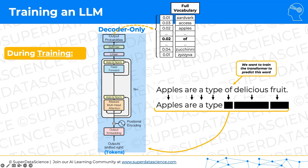Just remember, like from inference, we had a probability distribution. So as an output in training as well, we get a probability distribution for all of the words in our vocabulary — let's say there are 200,000 of them. We get these probabilities, they add up to one, and we're interested only in the probability for our target word. In this case, it's 'of' — we want the transformer to learn that the next expected word in this sentence was 'of'.